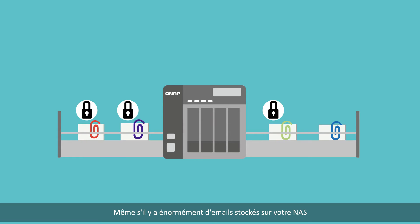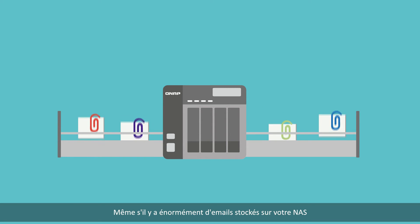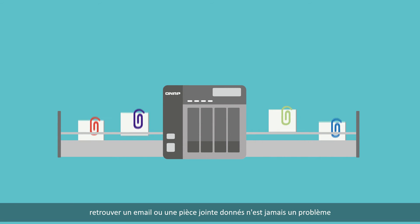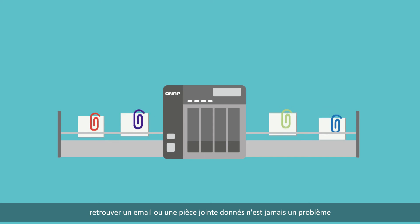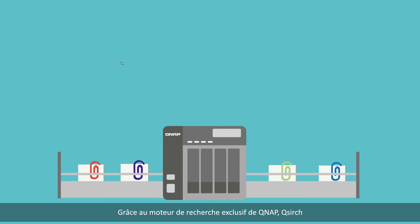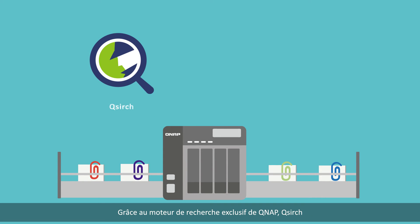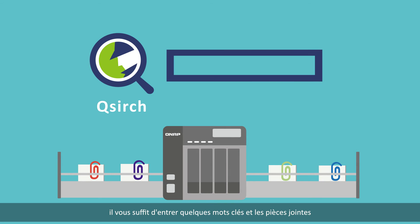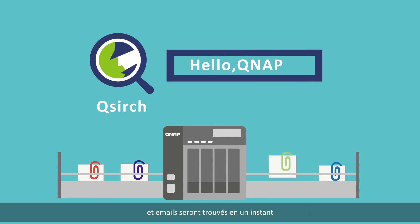Even with a huge amount of emails stored on your NAS, it is never a problem to quickly find specific emails or attachments by using QNAP's proprietary QSearch search engine. Just type in a few keywords and matching emails and attachments will be found within seconds.